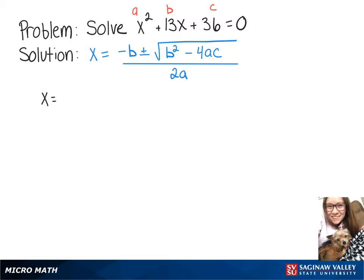So plugging each of those into our formula, we'll get x equals negative 13 plus or minus the square root of 13 squared minus 4 times 1 times 36 all over 2 times 1.